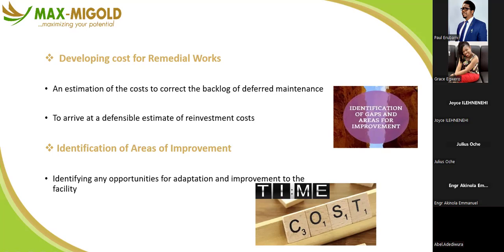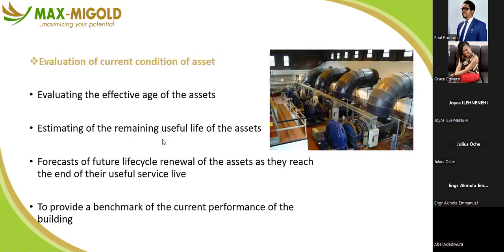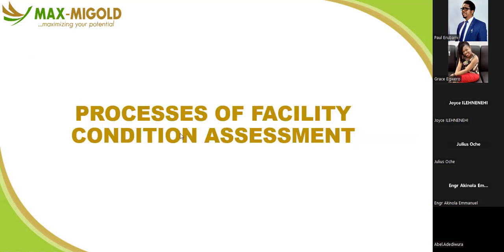Identification of areas of improvement — identify any opportunity for adaptation and improvement to the facility. Evaluation of condition of assets: evaluating the effective life of the asset, estimating the remaining useful life because with your assessment it is easier to estimate how long a particular asset will last before becoming obsolete. Planning for future lifecycle renewal as assets reach the end of their useful service life. And providing a benchmark for current performance of the building.